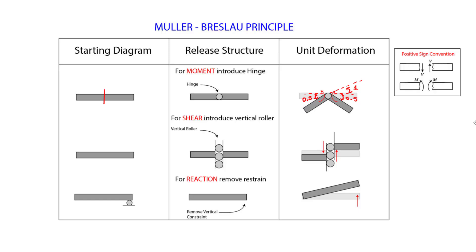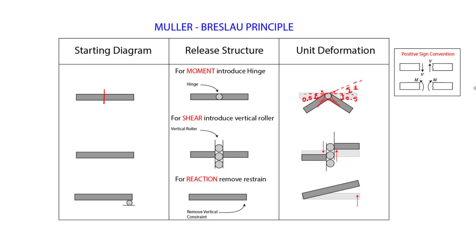We have a unit deformation of 1 and we assume the positive sign convention. So we apply a moment counterclockwise on the left side and clockwise on the right side. From our positive sign convention, if we make a section cut, the left side is counterclockwise and the right side is clockwise. When this moment is induced, on the top we will have compression and on the bottom we will have tension.